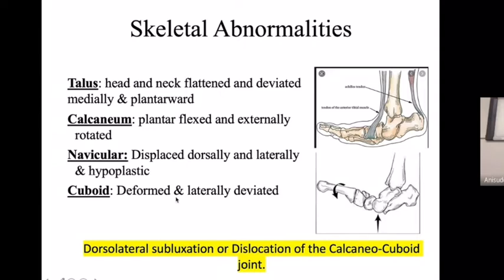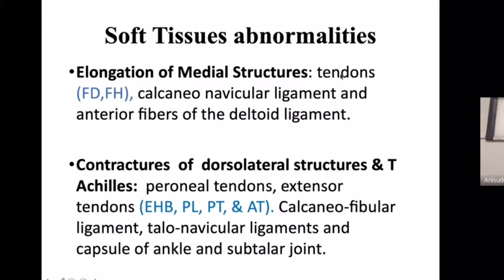The cuboid is deformed and laterally deviated, producing a reverse deformity. There is dorsolateral subluxation and dislocation of the calcaneocuboid joint, producing lengthening on the medial side, shortening on the lateral side, and equinus contracture. The elongated medial structures include flexor digitorum and flexor hallucis longus tendons, along with the calcaneonavicular ligament and anterior fibers of the deltoid ligament. The contracted dorsolateral structures include tendo Achilles, peroneal tendons, extensor tendons, extensor hallucis brevis, peroneus longus, peroneus tertius, and tibialis anterior.